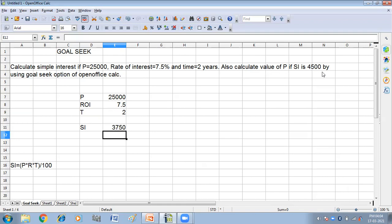Also calculate the value of principal if SI is 4500 by using the Goal Seek option of OpenOffice Calc. So what it is telling us is that SI should be 4500 by changing the principal amount. So we have to change the principal amount to get the 4500 simple interest.